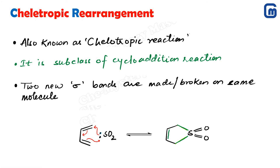In cheletropic reactions, the number of sigma bonds increases by two and the number of pi bonds decreases by two. The lone pair of electrons is considered equivalent to a pi bond when comparing with cycloaddition reactions.